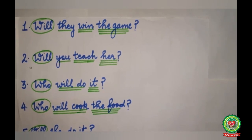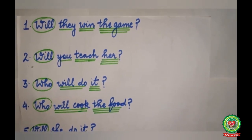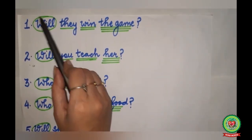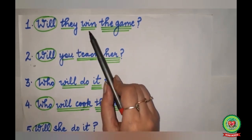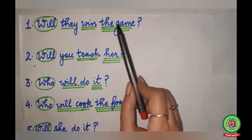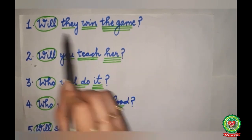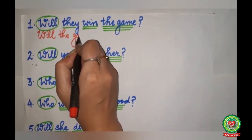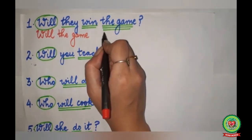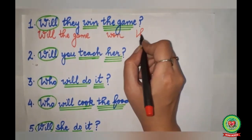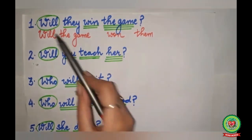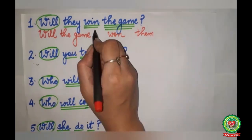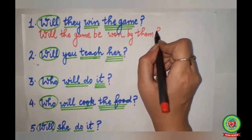Now these are examples of simple future tense. First: 'Will they win the game?' 'They' is subject — single underline. 'Win' is action word — double underline. 'The game' is object — triple underline. 'Will' will remain. 'The game' will come to beginning. 'Win' will change into 'won'. 'They' will become 'them'. We add 'be' before the verb. Answer: 'Will the game be won by them?'